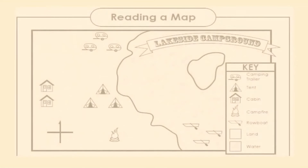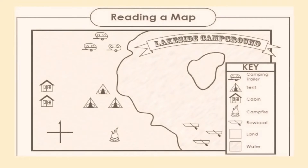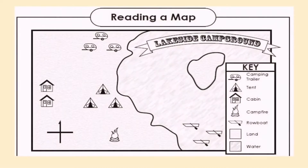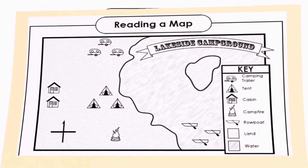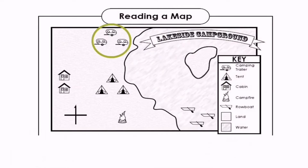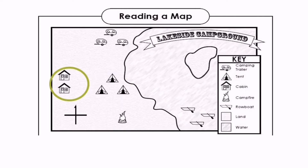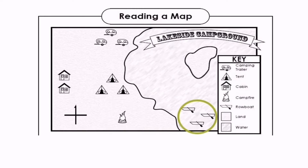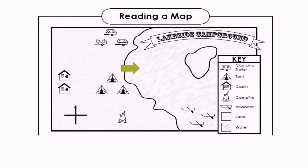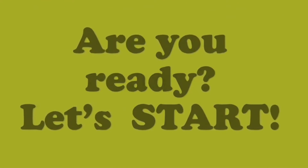It's now time to play a game to test your mastery. We'll be needing this map in order for us to answer some questions. But first, let's identify the parts of our map: the camping trailers, the tents, the cabins, a campfire, the rowboats, land, and water. Are you ready? Let's start!